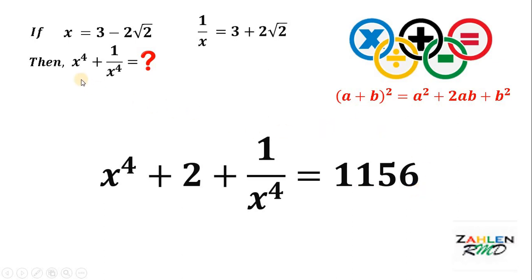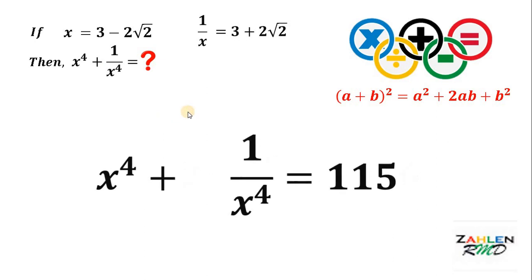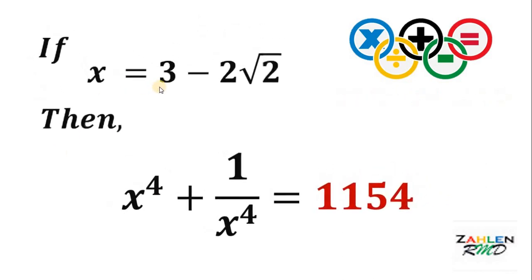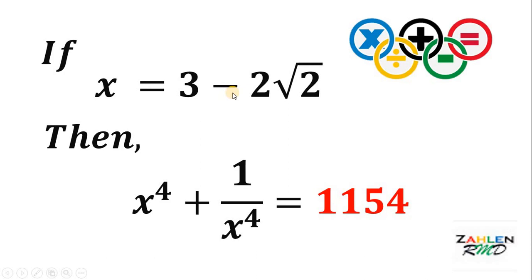Now, we want the value of x to the fourth plus 1 over x to the fourth. So, we subtract 2 from both sides, giving us x to the fourth plus 1 over x to the fourth equals 1,154. Therefore, if x equals 3 minus 2 times square root of 2, then the value of x to the fourth plus 1 over x to the fourth equals 1,154. And as always, we're done.